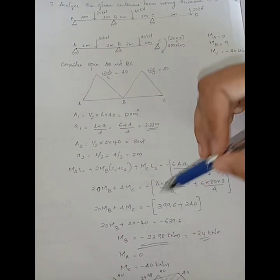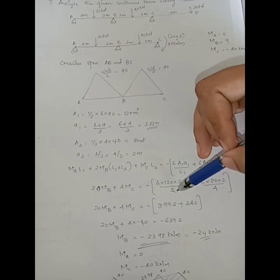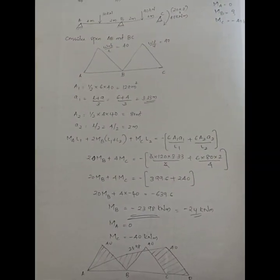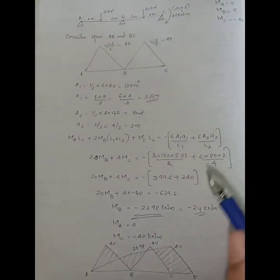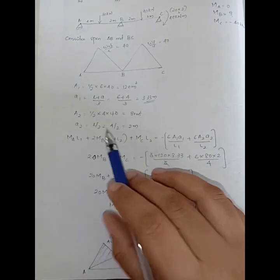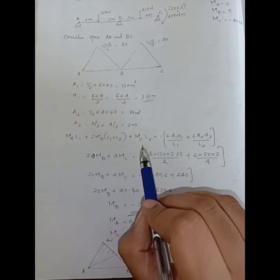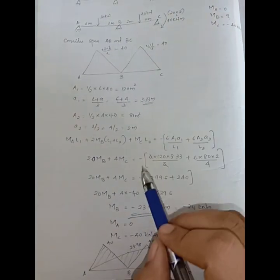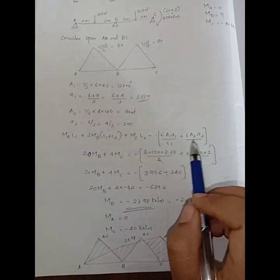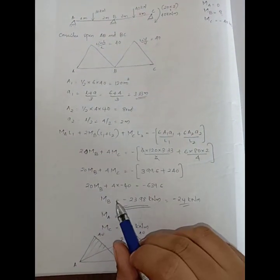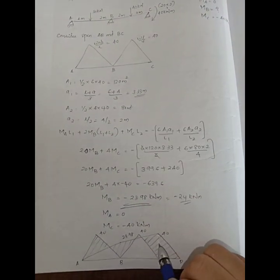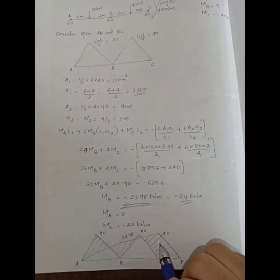Now MC0 is minus 40. We have to solve it. We will draw the bending moment diagram using the same equation: MA value is 0, MC value is minus 40. We will draw A1 and A2, then draw the equation with MA value = 0, and draw the BMD.